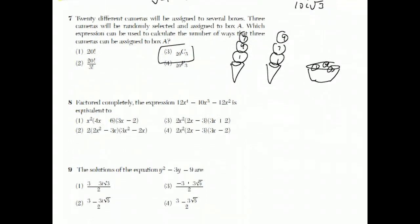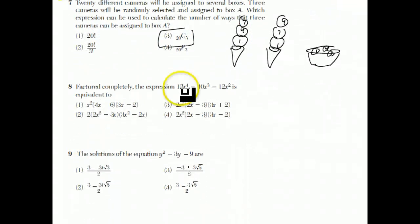Question number 8. They want us to factor 12x to the 4th plus 10x to the 3rd minus 12x squared. Well, the first type of factoring you should always look for is greatest common factor. Notice how all the terms are even, so 2 goes into them. And they all have x's in them. And, in fact, they all have, since x squared is the smallest exponent you see, we can factor out an x squared. We're left with 6x squared plus 5x minus 6.